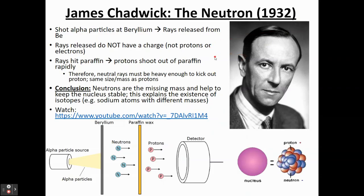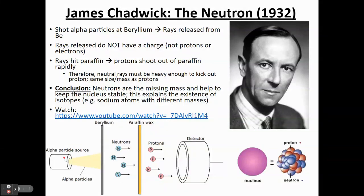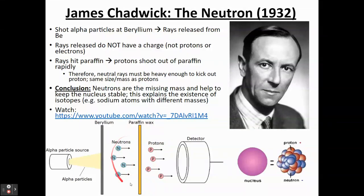James Chadwick solved the problem of the nucleus having only positive charges. He shot alpha particles towards a sheet of beryllium, which knocked out some big particles. He knew they were big because when they collided into paraffin wax, they knocked out protons — if you can move protons, you're a pretty big particle. He found they knocked out roughly the same number of protons, meaning they were roughly the same mass. These particles also had no charge — they were neutral overall. So in the atom, there are not just electrons and protons, but also these big neutral particles in the nucleus called neutrons.